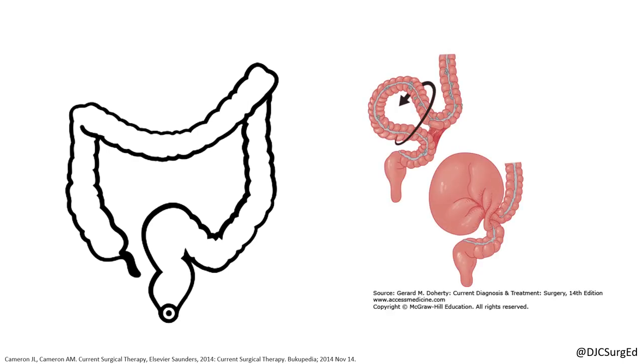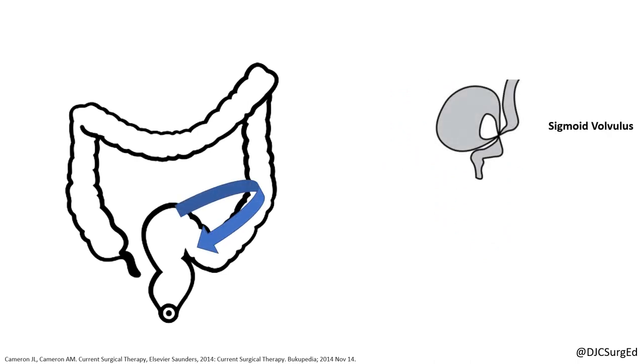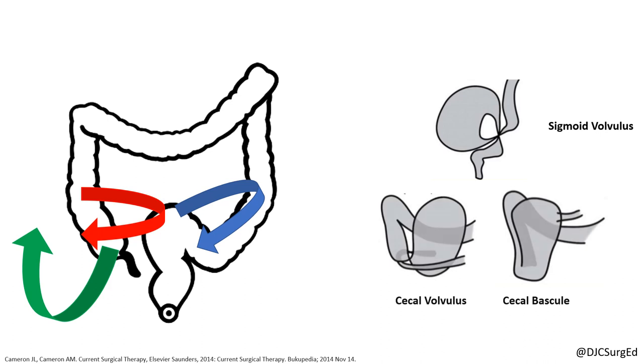Colonic volvulus is the third most common cause of large bowel obstruction behind malignancy and diverticular stricture, and occurs when a loop of bowel is twisted more than 180 degrees around its mesentery. Volvulus of the sigmoid colon accounts for two-thirds of cases, with the remaining cases mostly involving the cecum. Rare locations include the transverse colon and splenic flexure.